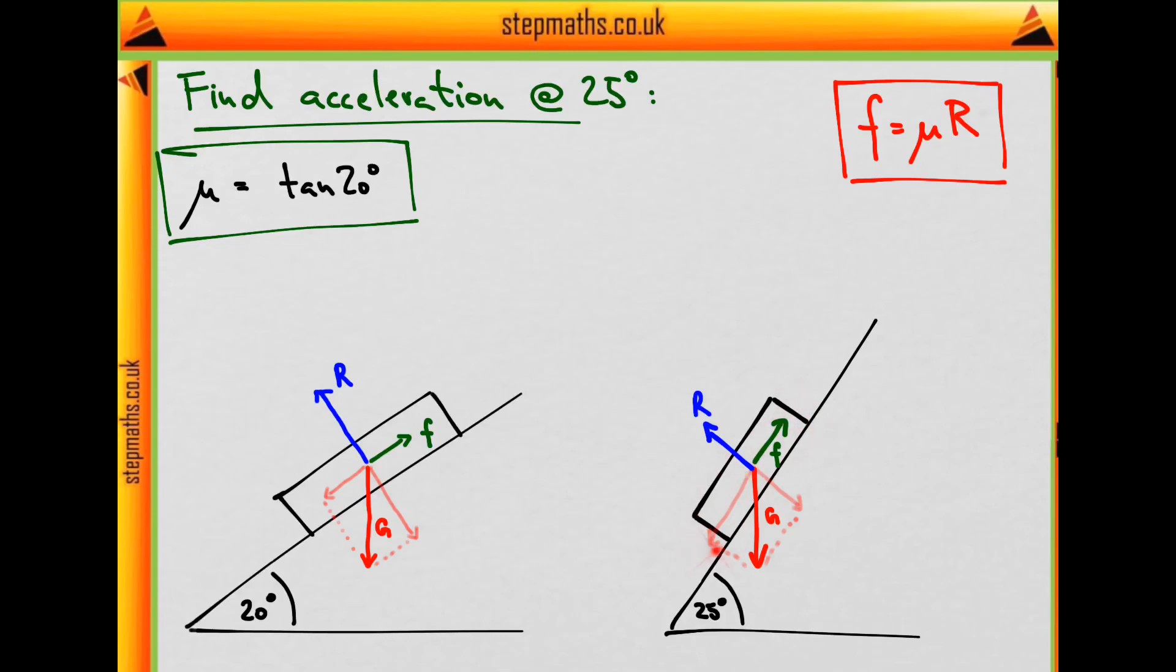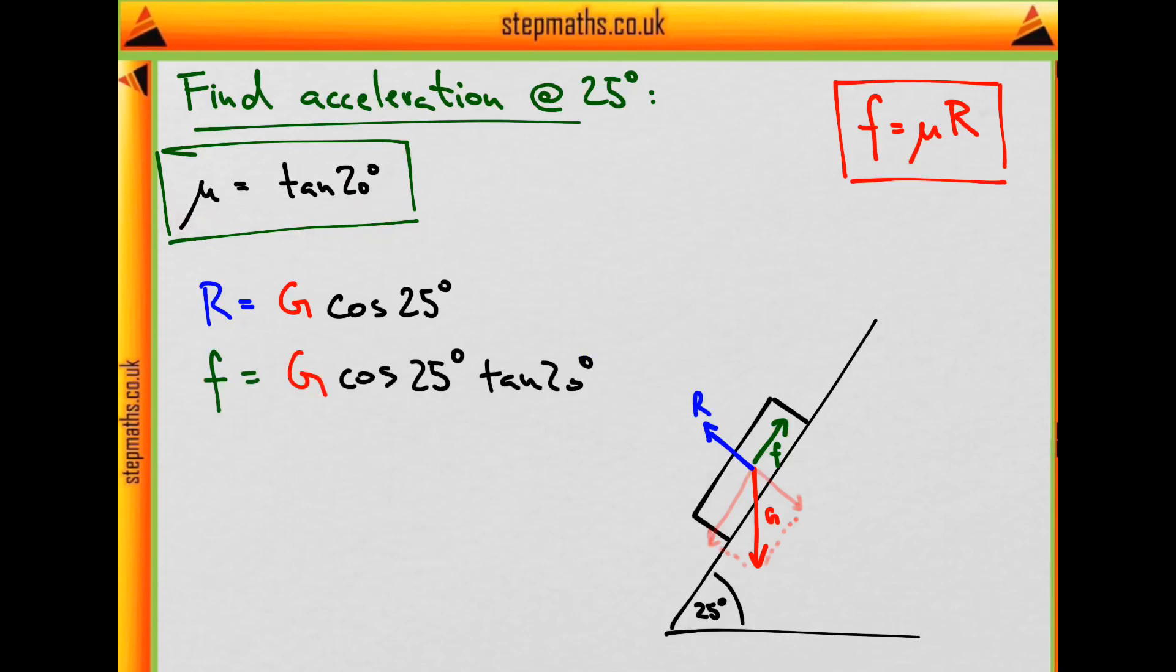So we need to work that out now, this difference of forces. So the reaction force is the force of gravity times the cos of 25 degrees. And to get friction, we need to multiply by this coefficient which we have found. So force of friction equals force of gravity times cosine 25 times tan 20. I'll start calling this projection P, just for clarity. And P is now force of gravity times sine of 25.